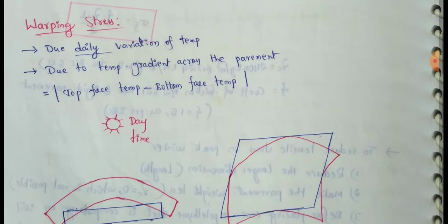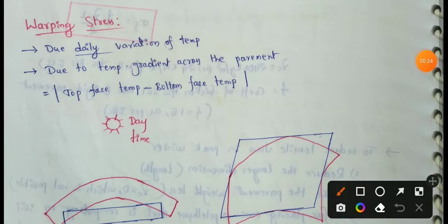I already discussed Frictional Stresses due to seasonal variation of temperature — summer and winter seasons — where temperature variations cause Frictional Stresses to act. These Warping Stresses are due to daily variation of temperature: night time and day time, these Warping Stresses develop.